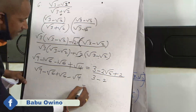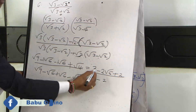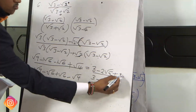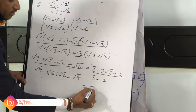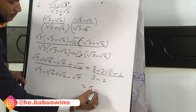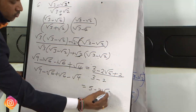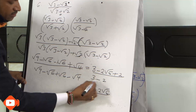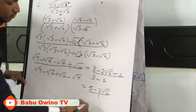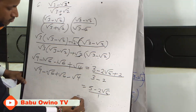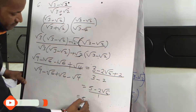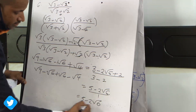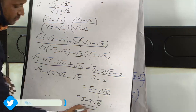So from here we have 3 plus 2, which gives 5, minus 2 root 6, divide by 3 minus 2 which is 1. So we have 5 minus 2 root 6. This is our answer.